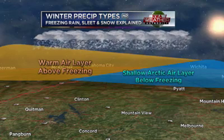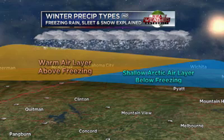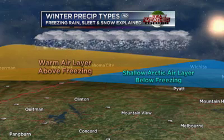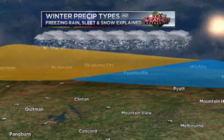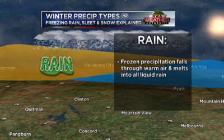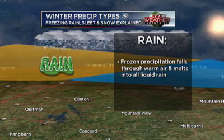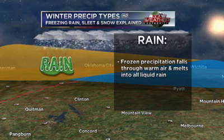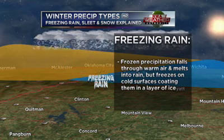Here we have precipitation across the entire area, and I want you to know that it all starts off as snow, because above that warm air layer, temperatures are well below freezing. The difference is when it falls into that warm layer of air. Rain is pretty simple — the snowflakes fall, melt into liquid rain, and because it remains above freezing, represented by that orange-colored area, it continues to remain liquid and never freezes.